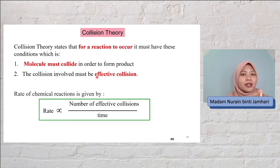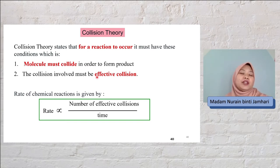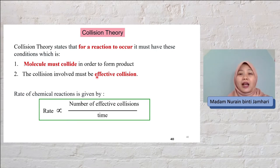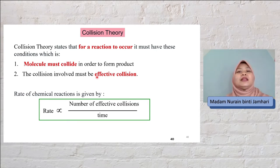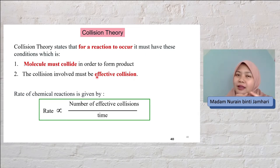The first one, they must collide and the collision must be an effective collision, which will lead to the formation of the products. If they just collide but it is not an effective collision, then no product will be formed.